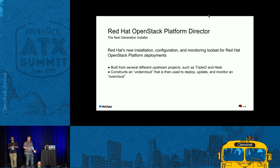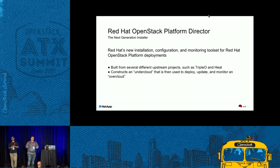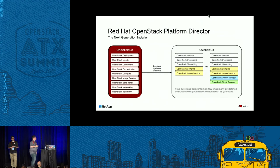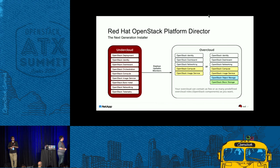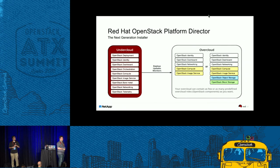I'm going to chat about how we install, manage, and configure an OpenStack cloud. Director is our next generation — we decided to leverage what the community already gives us through TripleO and Heat. This constructs an under cloud that we use to deploy the over cloud — the actual OpenStack cloud that you will be using. You can see all of these services in the under cloud such as Keystone, Horizon, and they all work together to run, update, and monitor the over cloud, with some services replicated in each.